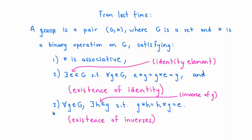And number three, for every g in G, there exists an h in G such that when you combine g with h, either as g star h or as h star g, you recover the identity element. That element h is called the inverse of g. Property number two is what we referred to as existence of identity, and property number three is what we referred to as existence of inverses.